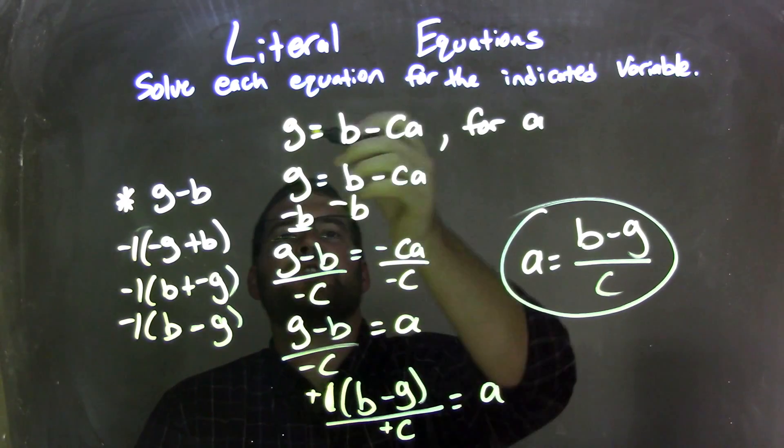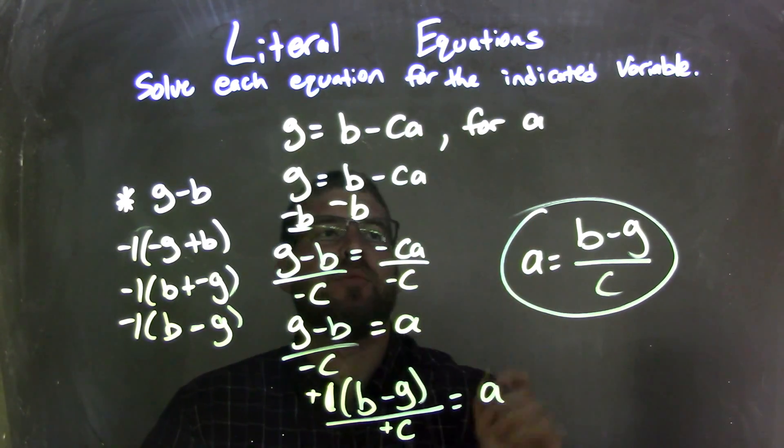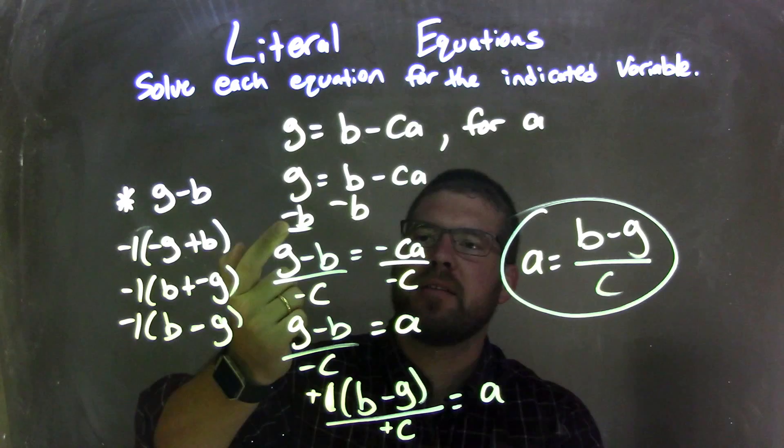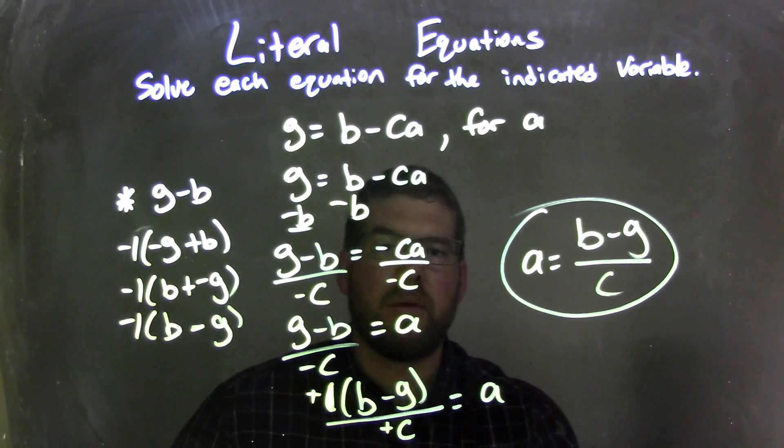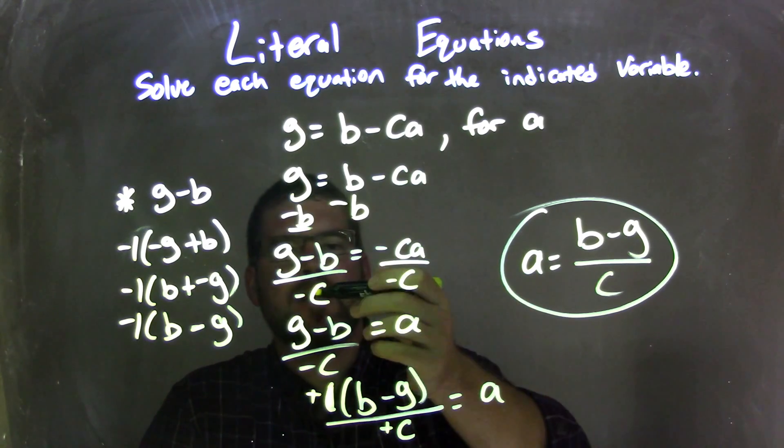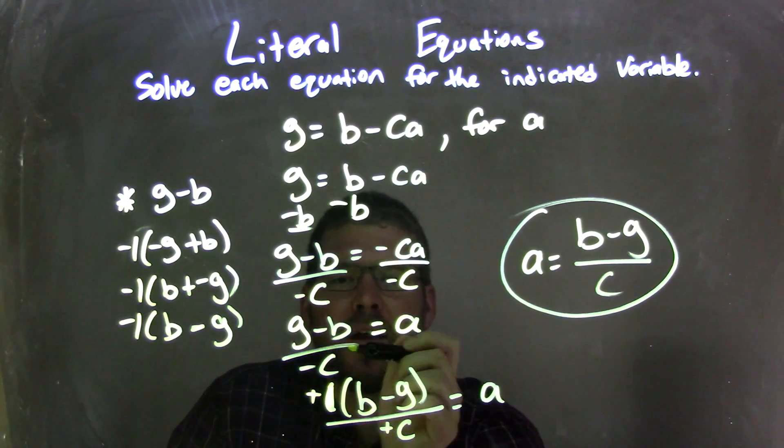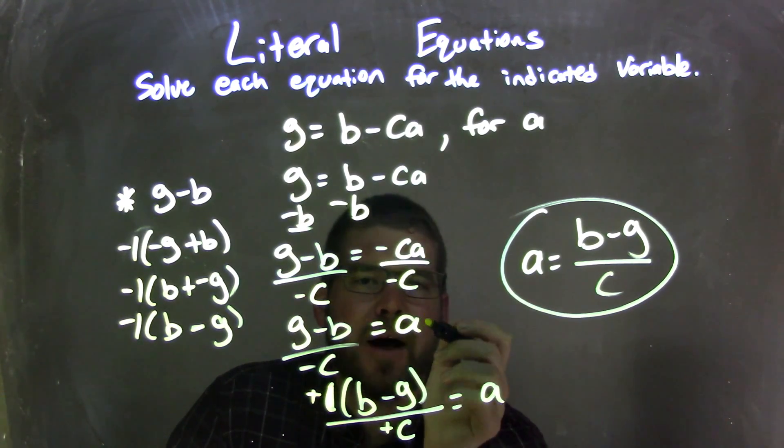So let's recap. We're given G equals B minus CA, and we're solving for A. I rewrote my equation. I then subtracted B from both sides, leaving me with G minus B on the left equals negative CA on the right. I then divided by negative C to both sides, leaving me with G minus B over negative C on the left, and that's equal to positive A on the right.